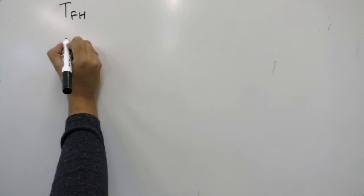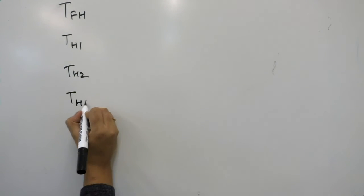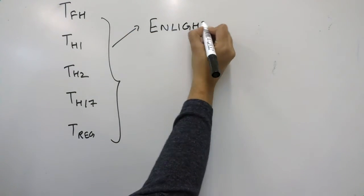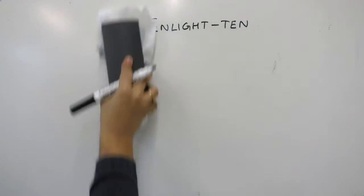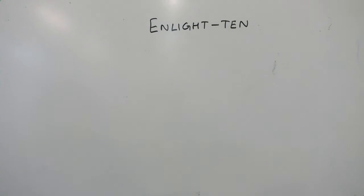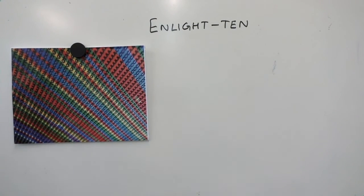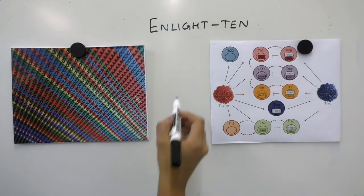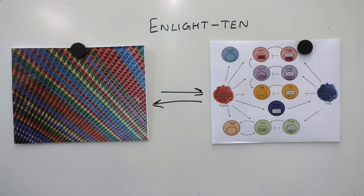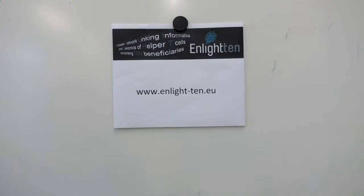TFH cells and other T cell subsets are extensively studied in a European research consortium called nLighten. This consortium provides cross-disciplinary training by using advanced techniques and analyzing big data for the advancement of T cell research. For more information on the consortium, visit www.nlight-10.eu.